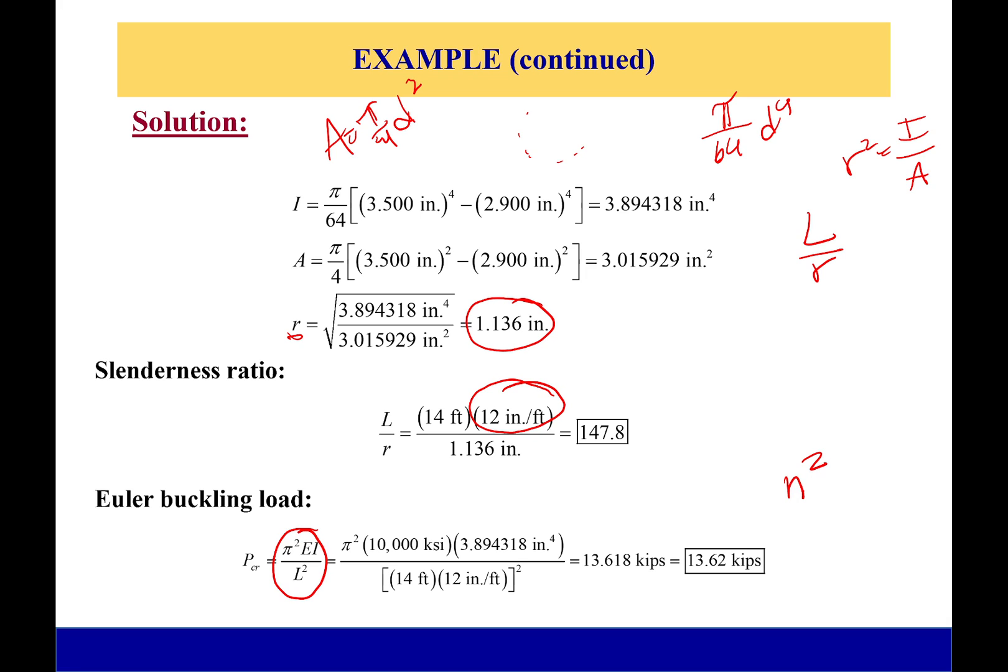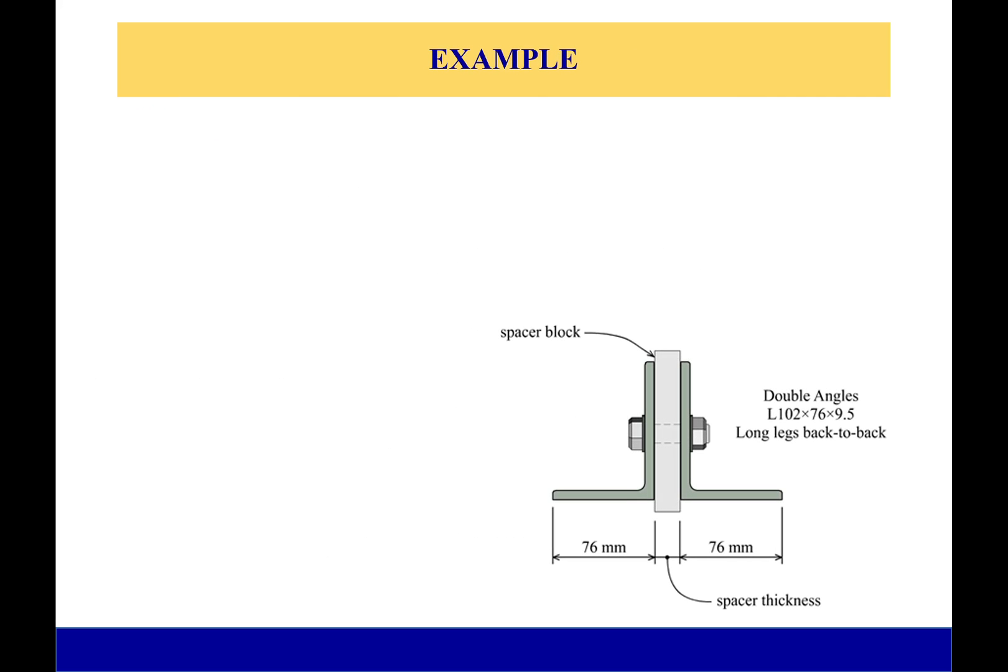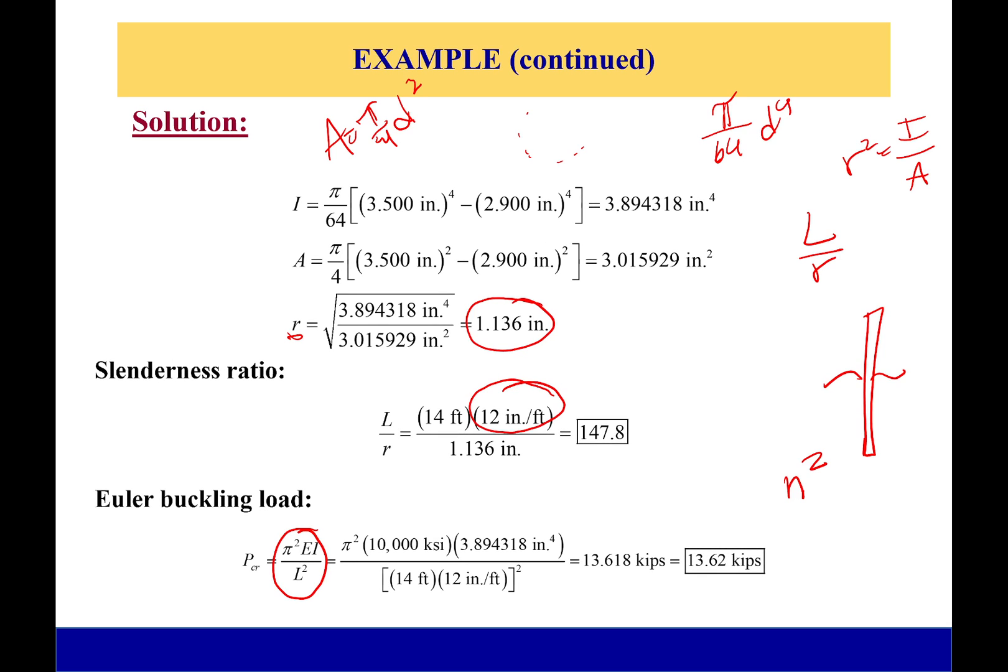If it had said that the column was supported at the middle or something, then we'd have to remember that it would be n equal to 2 and keep going up. It didn't mention these sort of supports, so we're just going to say that n is equal to 1.